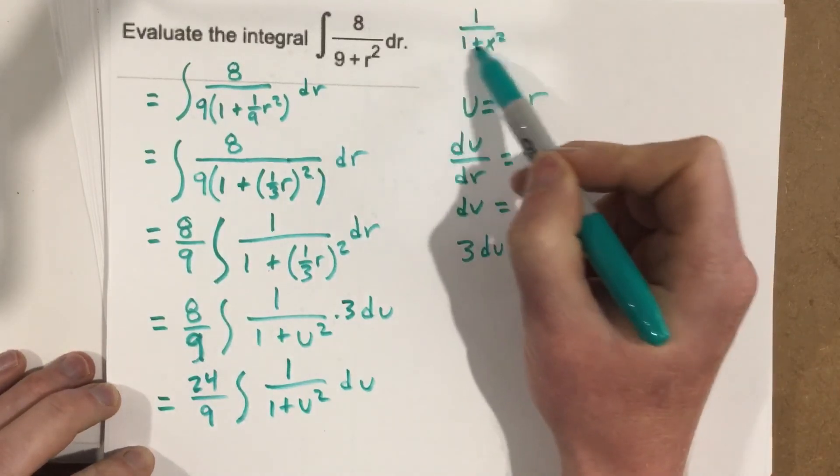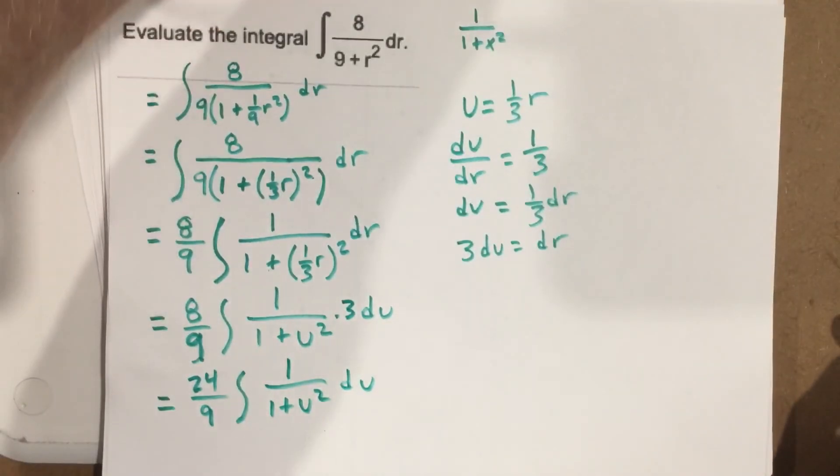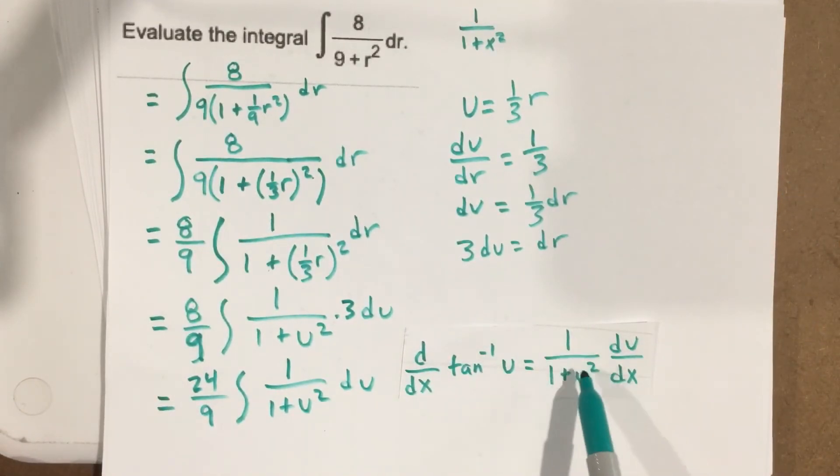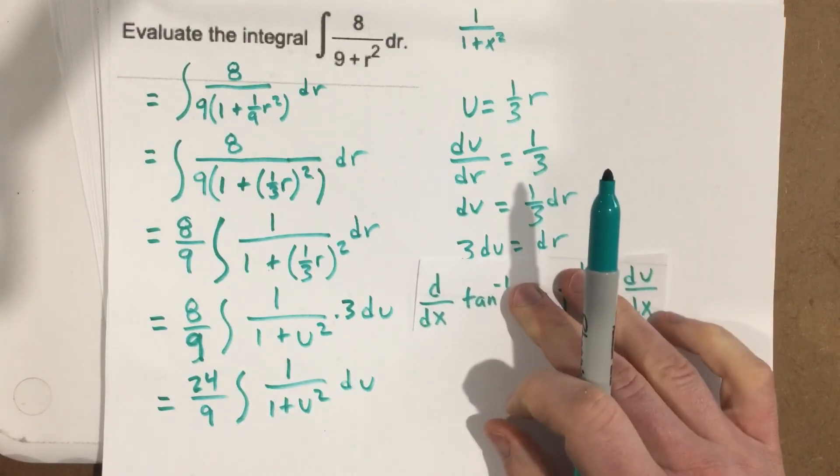Finally, to this spot right here. And if I look here, I know that if the derivative of tangent inverse is 1 over 1 plus u squared, the antiderivative of 1 over 1 plus u squared is tangent inverse u plus c. So I'm going to go ahead and use that here.